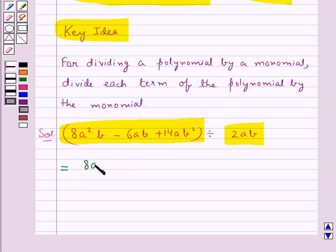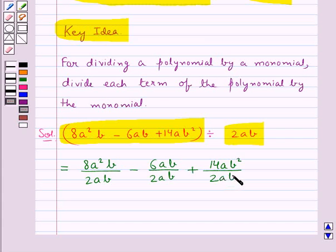So this would be equal to 8a²b/2ab - 6ab/2ab + 14ab²/2ab.